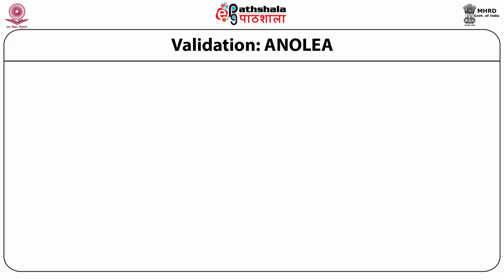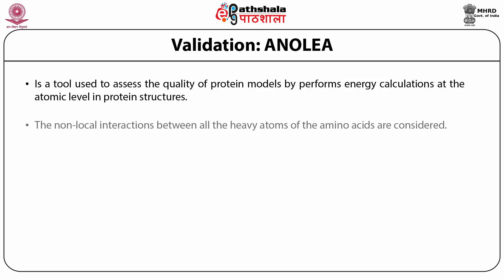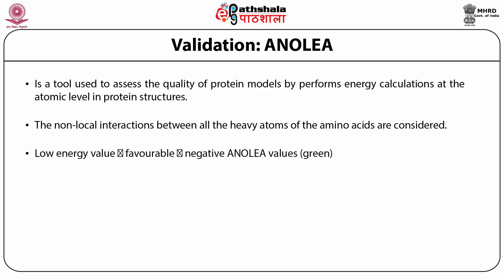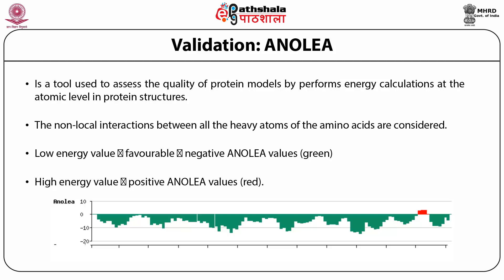Another important validation tool is ANOLEA. It is a tool used to assess the quality of protein models by performing energy calculations at the atomic level in protein structures. The non-local interactions between all the heavy atoms of the amino acids are considered. A low energy value indicates a favorable model structure, shown by negative ANOLEA values represented in green on the graph. High energy values indicate unfavorable conformations, shown as positive ANOLEA values indicated in red.